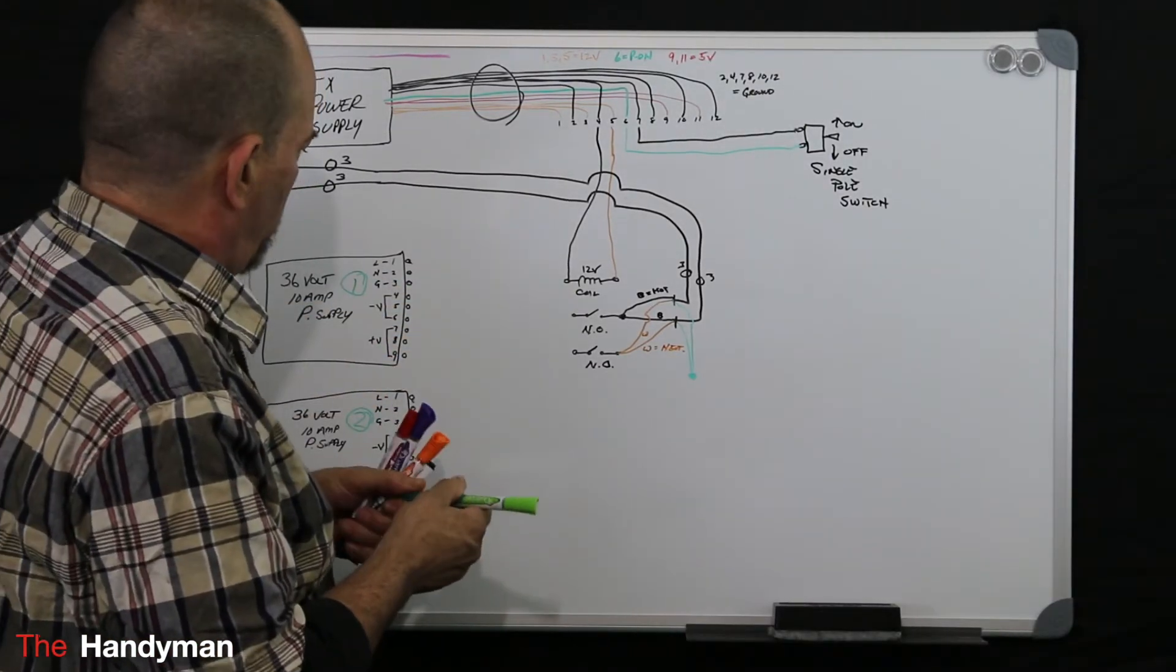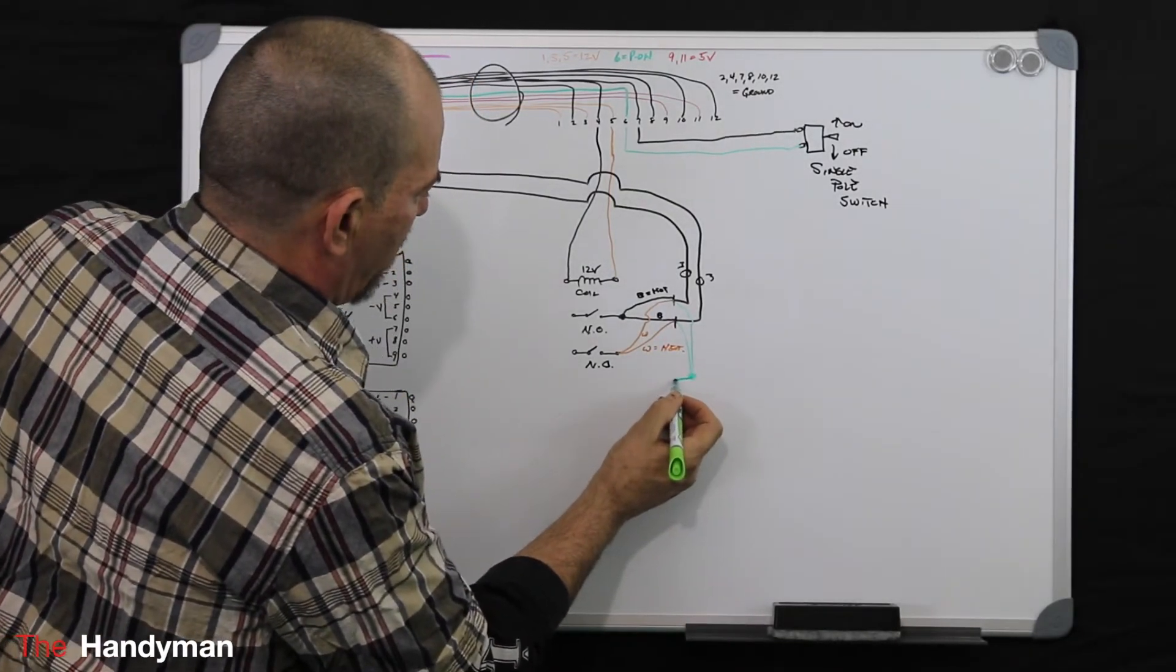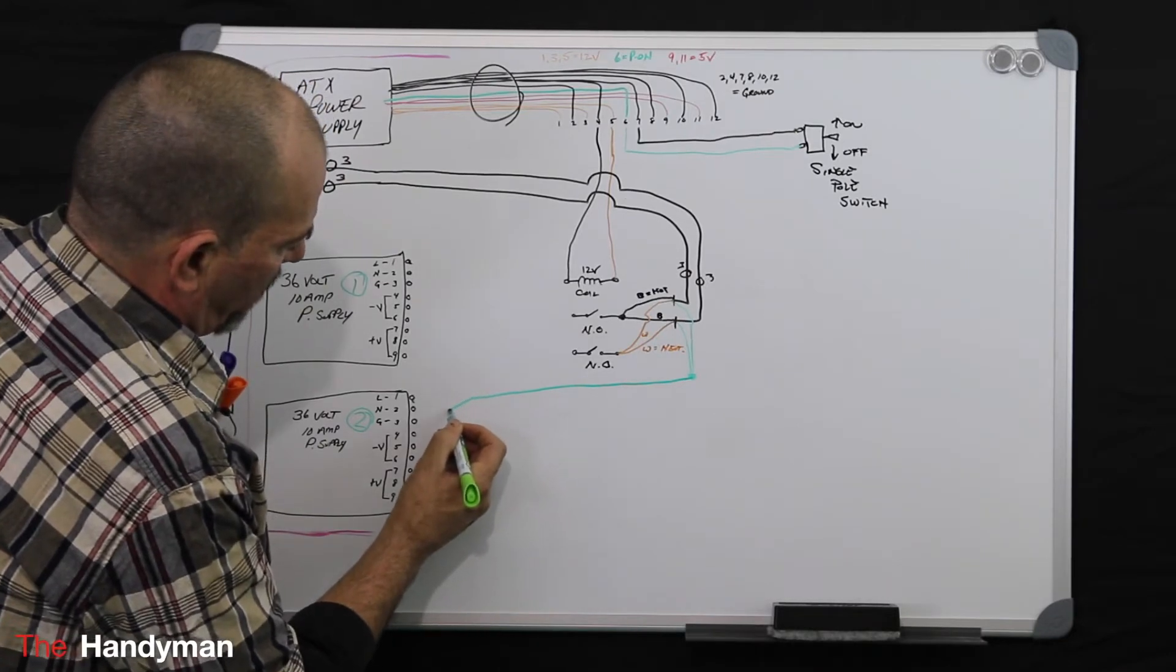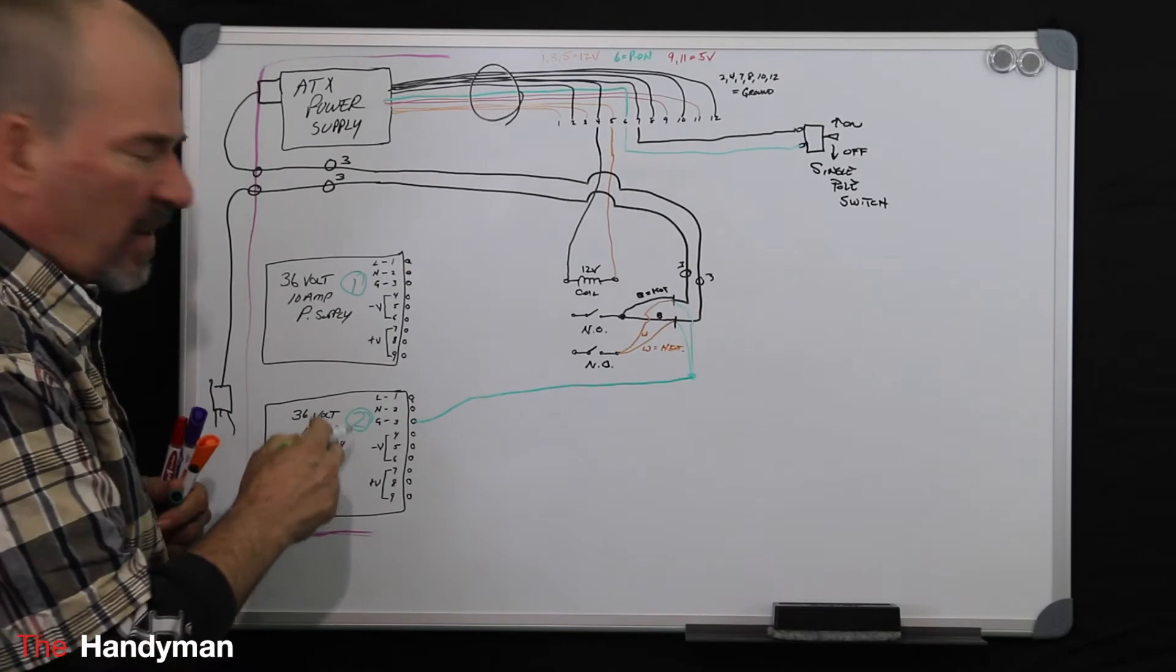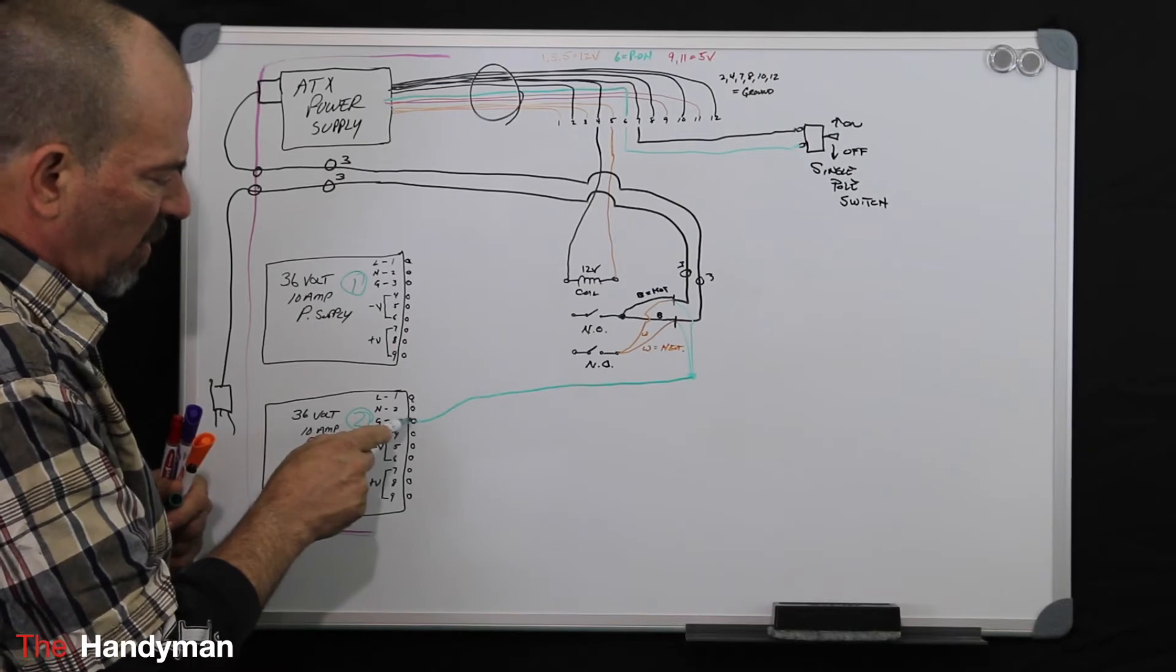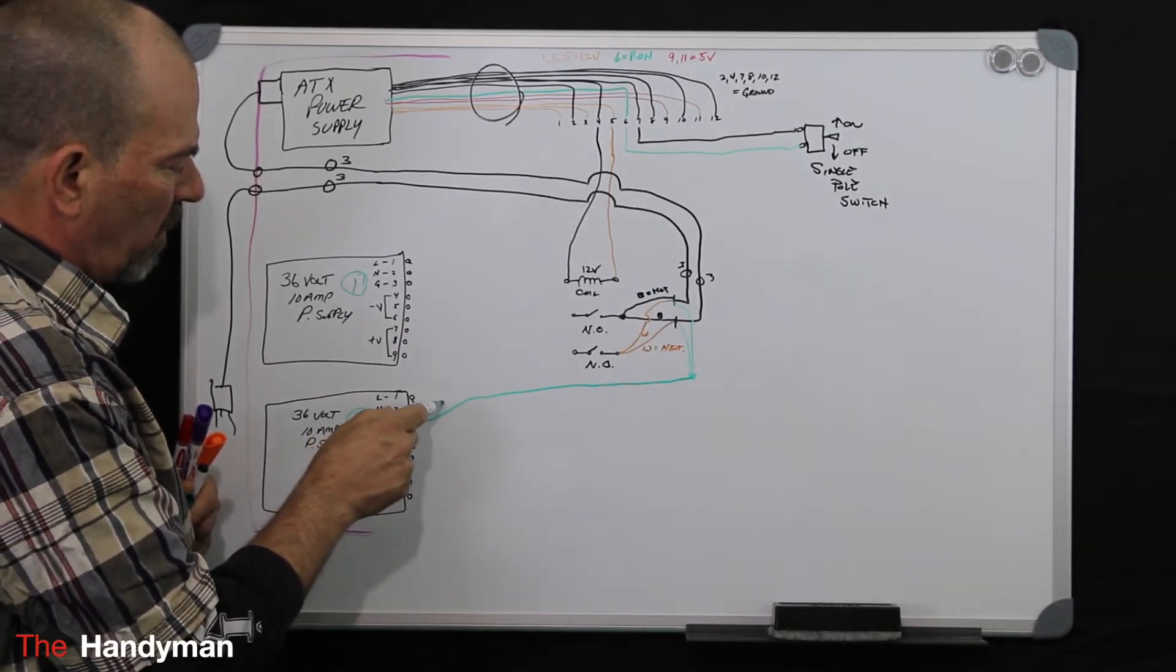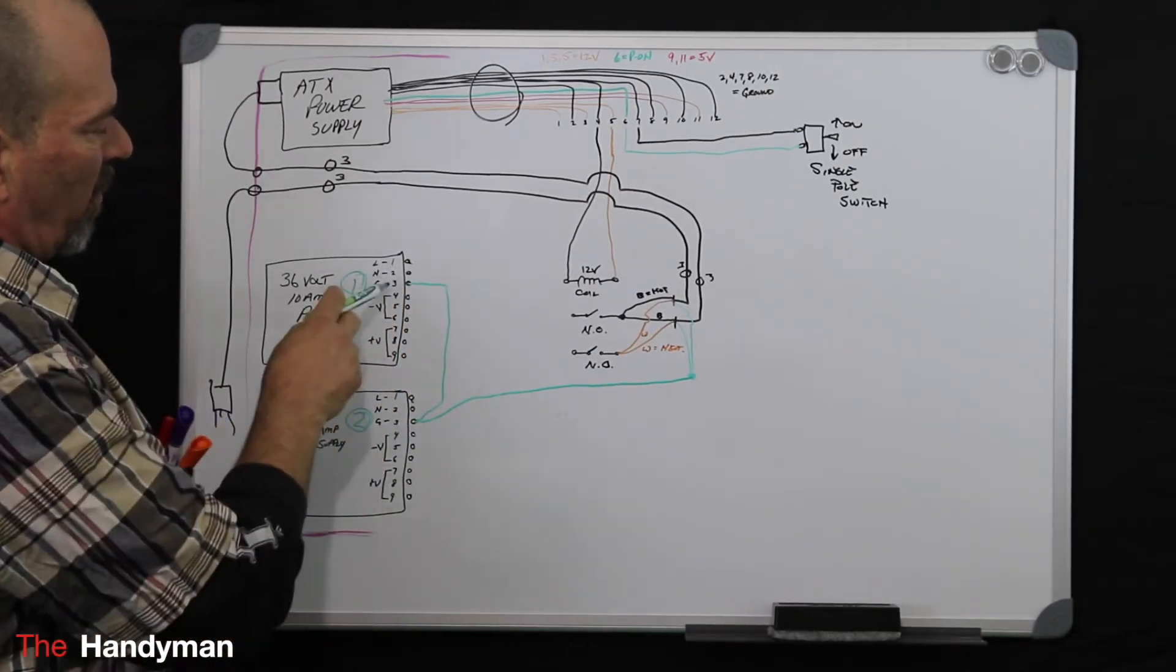So what we're going to do, you're going to take your ground, come over here, and on these power supplies that I bought, the ground is the third screw terminal. So you're going to land that ground under the third screw terminal, then make a jumper, come up, and go to the other power supply to the ground screw.